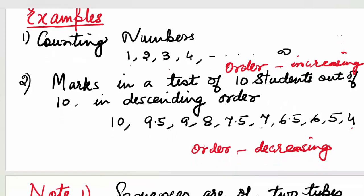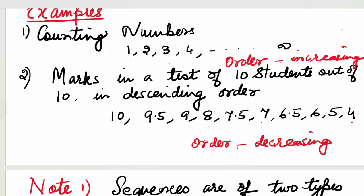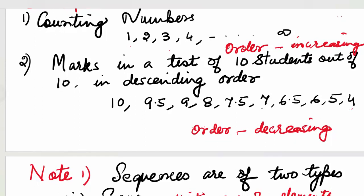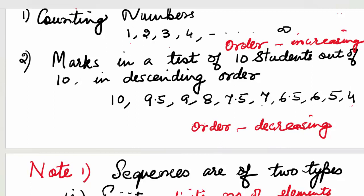Let's say there is a class of 10 students and they write a test. The marks are given out of 10. If the teacher puts their marks in descending order, let's say the marks are 10, 9.5, 9, 8, 7.5, 7, 6.5, 6, 5, and 4 — the highest being 10 and the least being 4. All these are numbers, and how have they been arranged? In decreasing order. So the marks form a sequence. You can have many more examples — for instance, students in a class arranged by height in ascending order, so their heights also form a sequence.